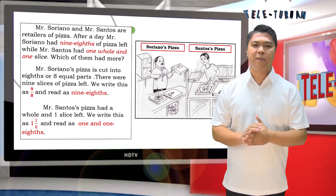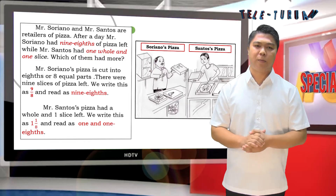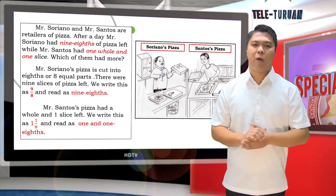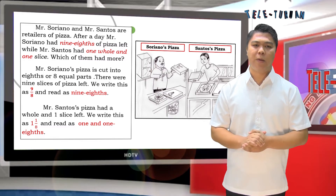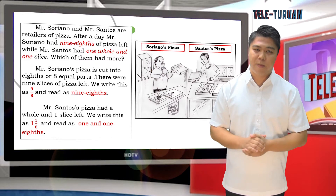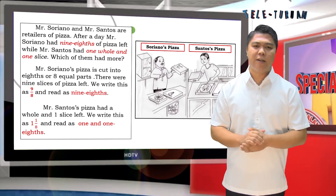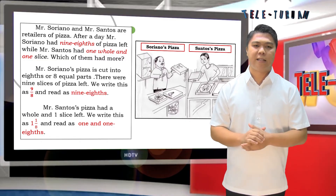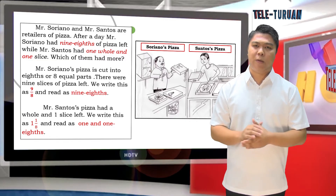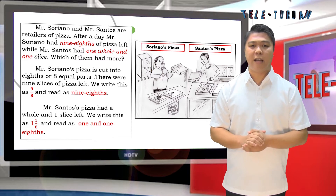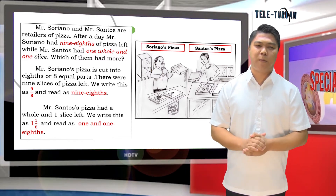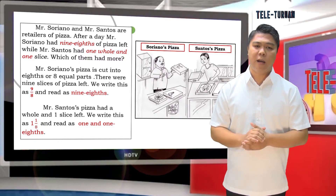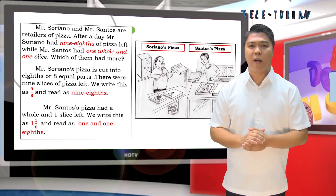Mr. Soriano and Mr. Santos are retailers of pizza. After a day, Mr. Soriano had 9/8 of pizza left, while Mr. Santos had 1 whole and 1 slice. Which of them had more? Mr. Soriano's pizza is cut into eighths or 8 equal parts — there were 9 slices left, written as 9/8. Mr. Santos' pizza had 1 whole and 1 slice left, written as 1 and 1/8.